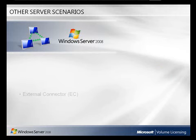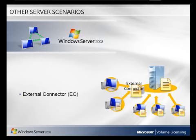If you would like to allow your business partners or customers access to your network, you have two licensing options: acquire Windows Server CALs for each of your external users, or acquire external connector licenses for each copy of Windows Server 2008 software that will be accessed by your external users. The external connector license is required for each server accessed by non-employees and gives the right for any non-employees to access the server.